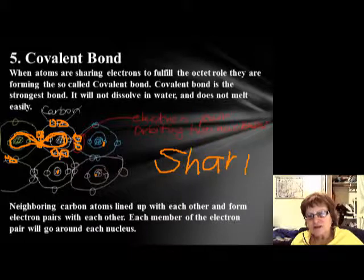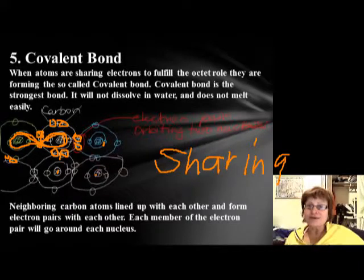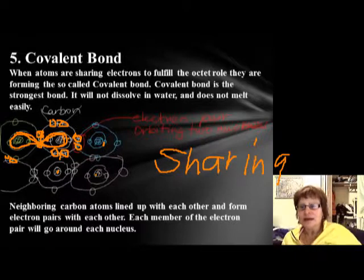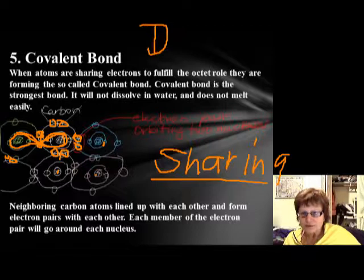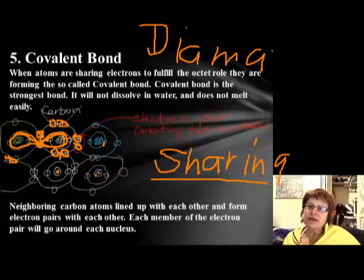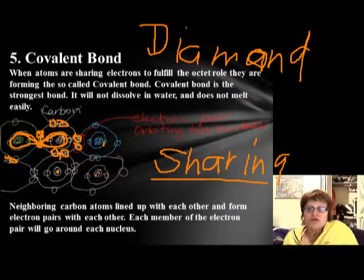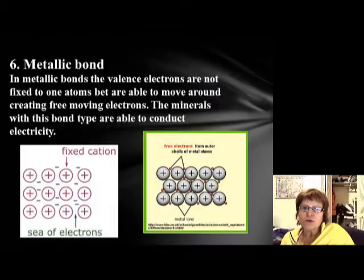The nucleus doesn't know those electrons are also going around the next one—they just feel they have them, so they're happy. The covalent bond is the strongest bond. The structure I just drew is the diamond structure, and diamond is the strongest mineral in the whole world.